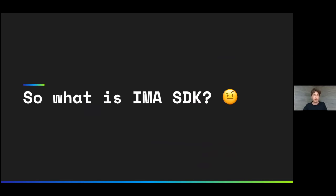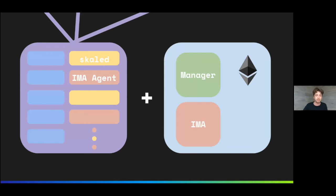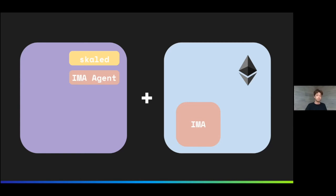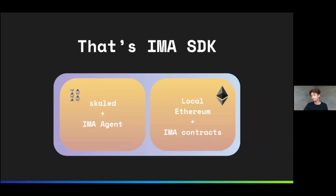So what is IMA SDK? It's a piece of software that combines the SKALE node part and EZero mainnet part in a single package — but with just one node, without base containers, without other chains on the node, and without the SKALE manager set of contracts. So only the stuff that's required for IMA-focused development. All of that is shipped as a single Docker Compose file with two containers: one with SKALE D and IMA inside, and a second one running local Ganache.